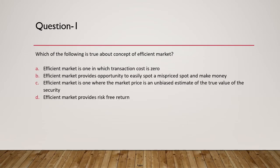Question 1: Which of the following is true about the concept of an efficient market? Option A — transaction cost is zero — refers to transactional efficiency, not information efficiency, so it's ruled out. Option B — easily spot a mispriced stock and make money — is not what EMH suggests. Option C — market price is an unbiased estimate of the true value of a security — is correct. Option D — provides risk-free return — is also incorrect. The answer is C.